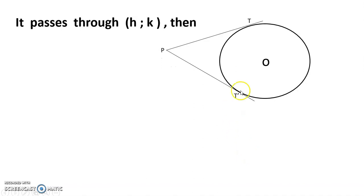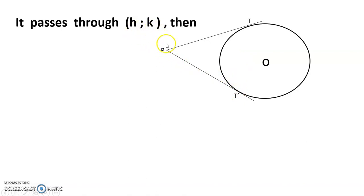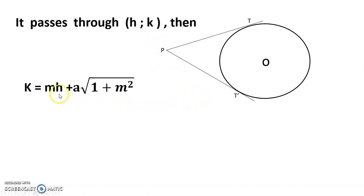As you can see in the diagram, O is the center of the circle, and two perpendicular tangents T and T' meet at point P with coordinates (h, k). We have to find the locus of (h, k). So: k = mh + a√(1 + m²), because we know the tangent equation.